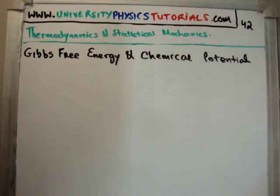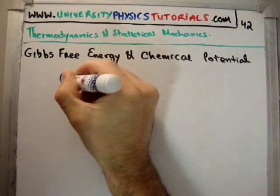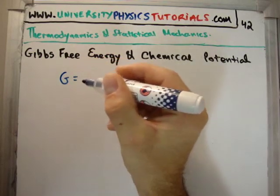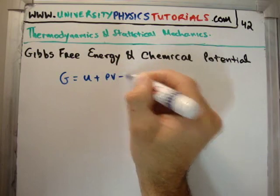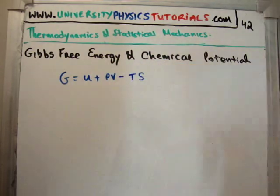So, to do a small bit of revision, we saw in a previous video that the Gibbs free energy, capital G, is given by U plus PV minus TS.